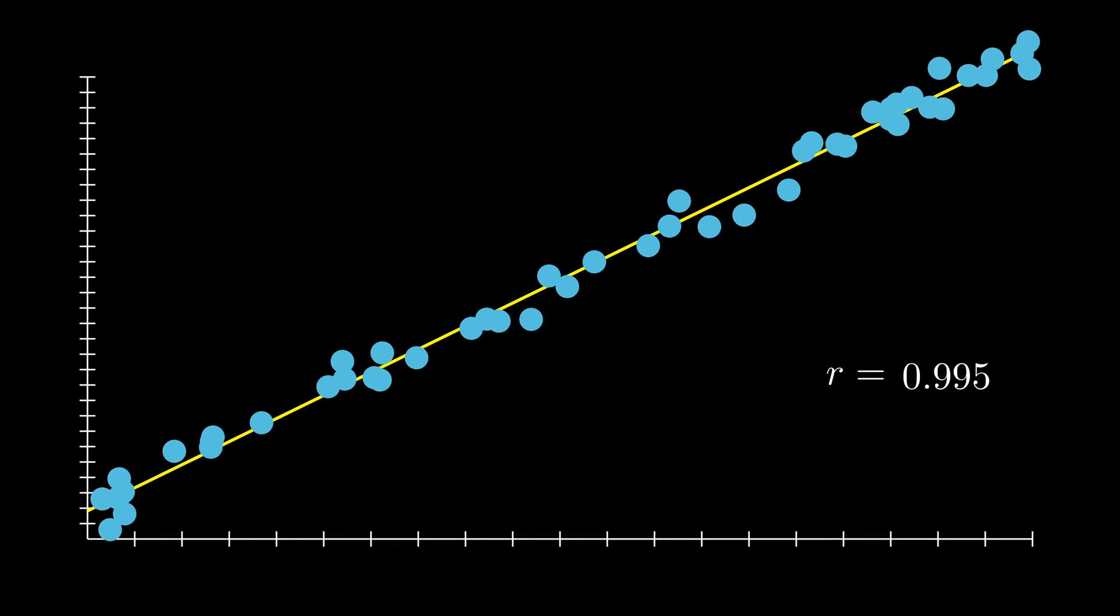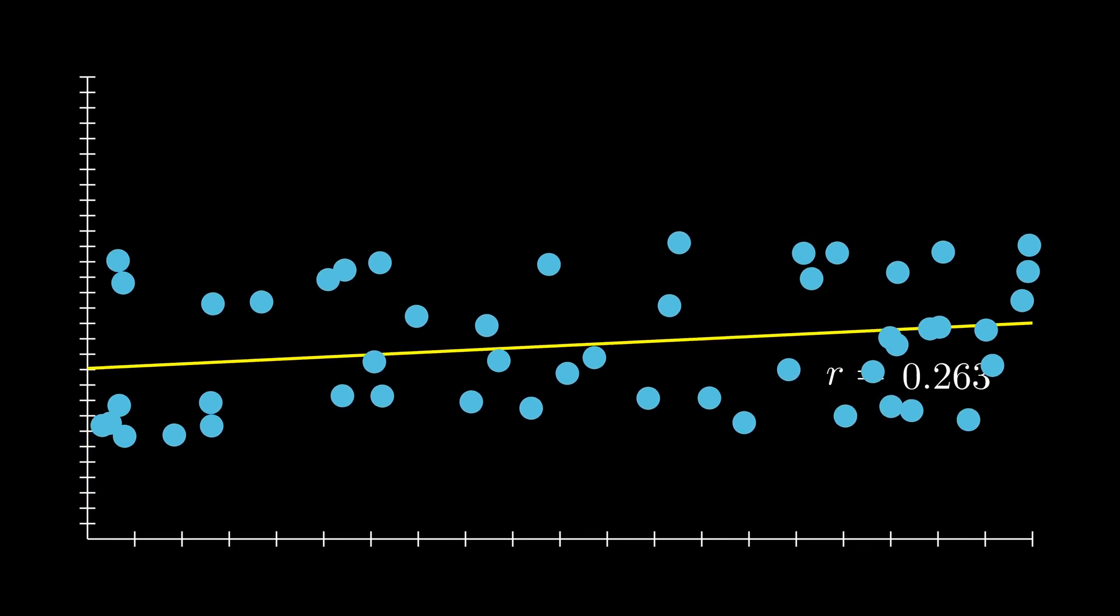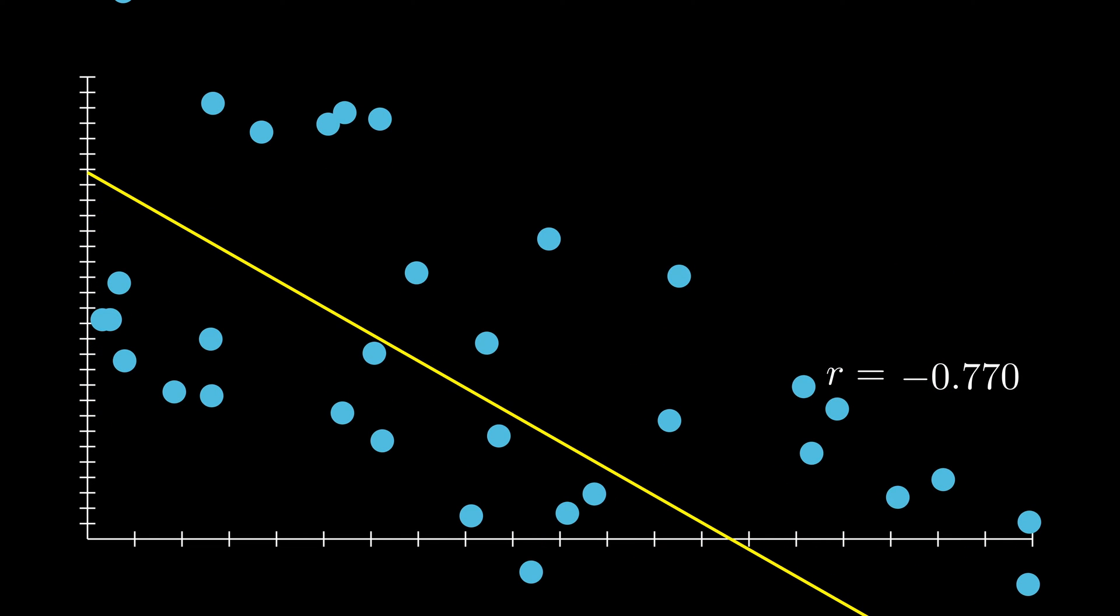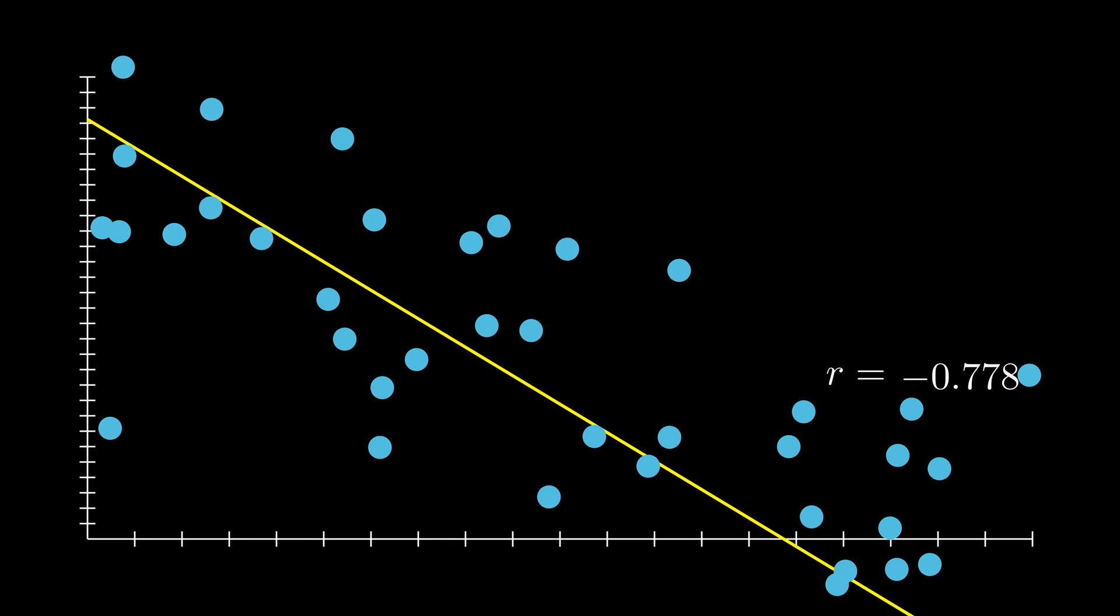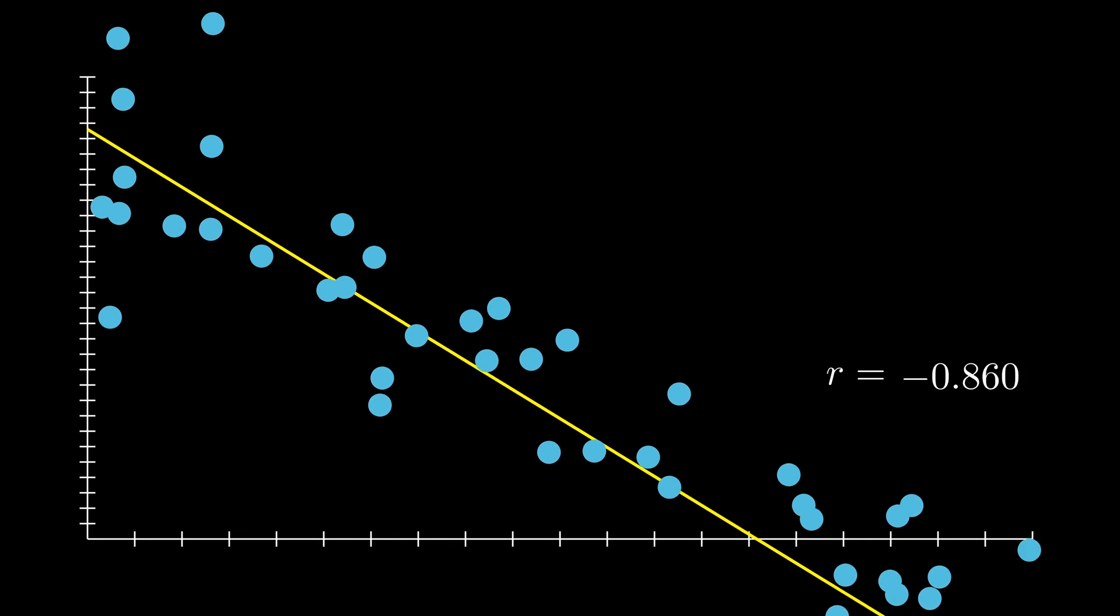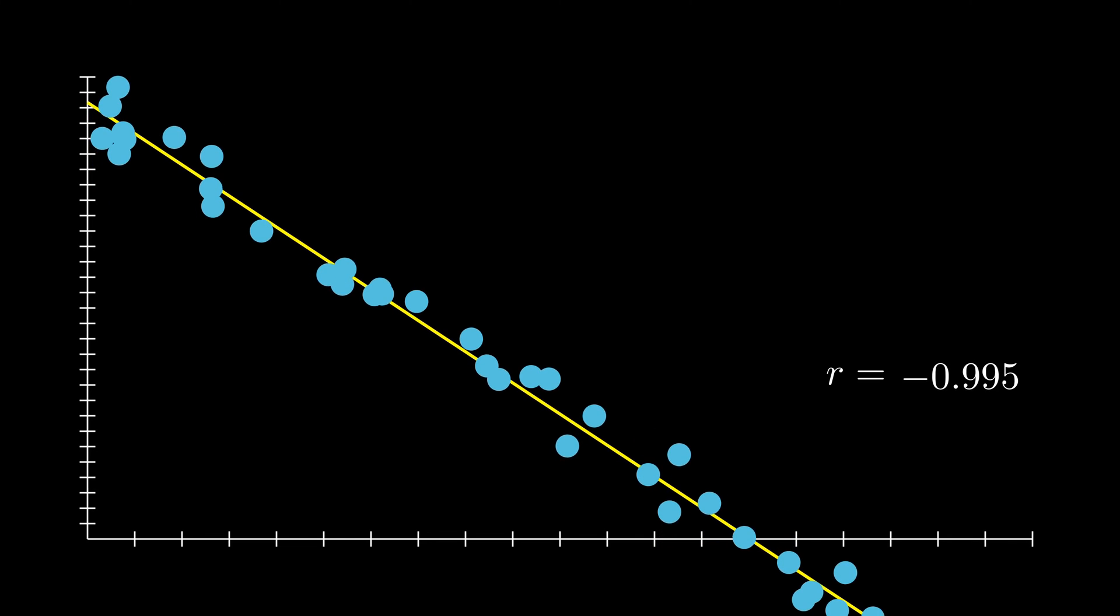A correlation coefficient closer to 0 indicates there is no correlation. If it's closer to 1, it indicates a strong positive correlation, meaning that when one variable increases, the other proportionally increases. If it's closer to negative 1, it indicates a strong negative correlation, which means as one variable increases, the other proportionally decreases.